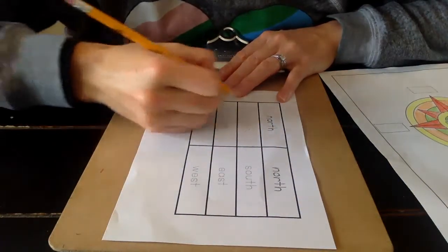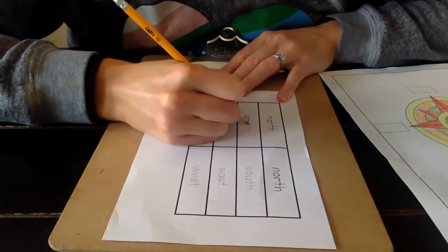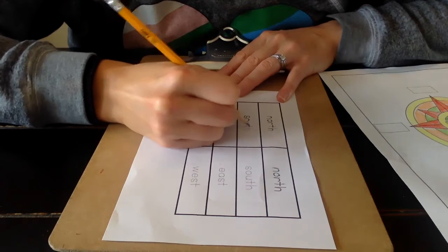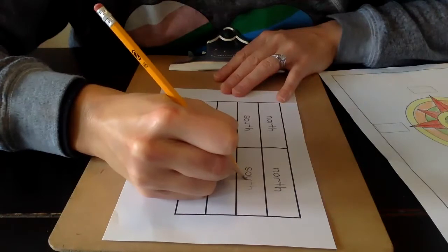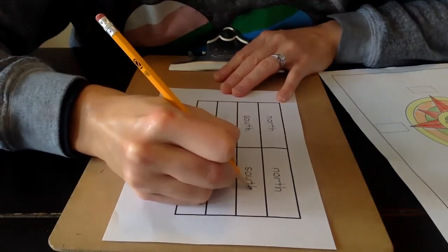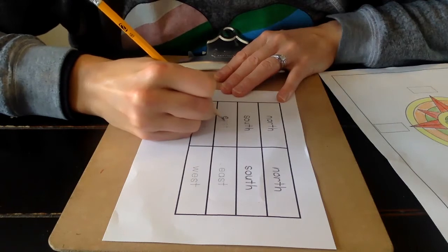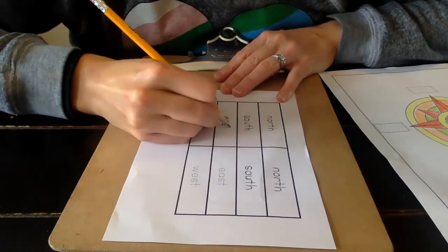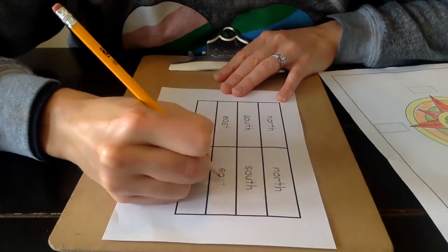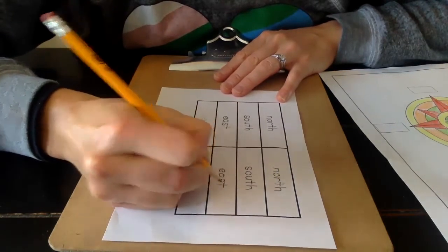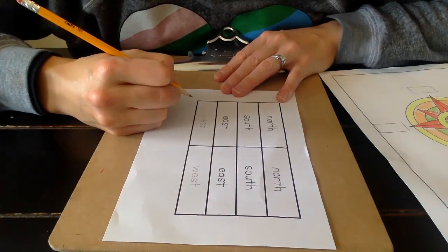Next one is south. S-O-U-T-H. And I'm going to do it again. S-O-U-T-H. The third one is east. E-A-S-T. Remember we repeat it. There's two labels.